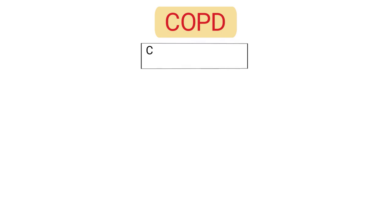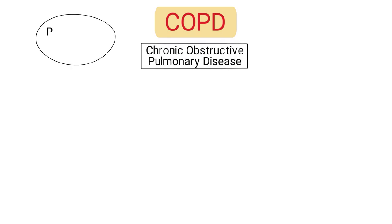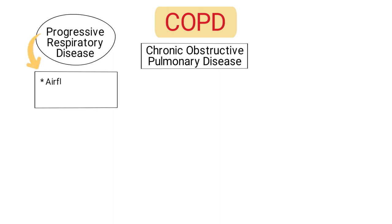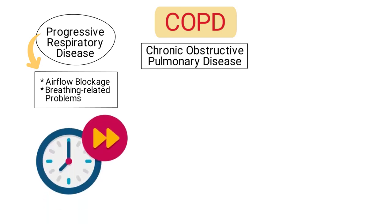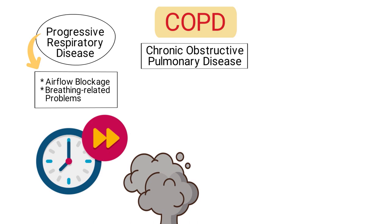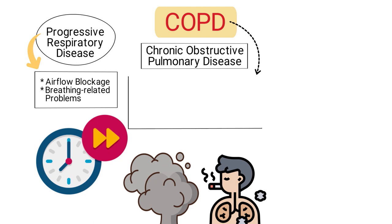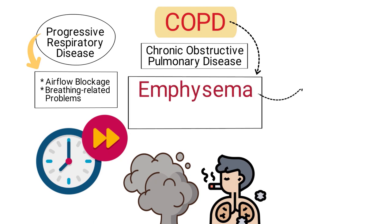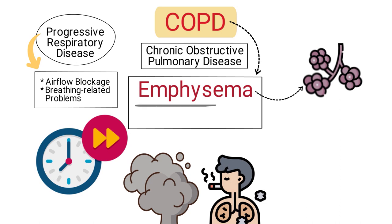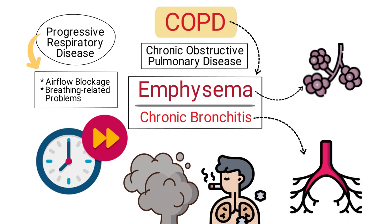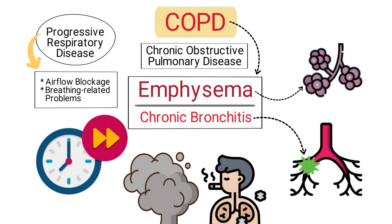First, we have COPD, which stands for chronic obstructive pulmonary disease. It is a progressive respiratory disease that causes airflow blockage and breathing-related problems. It's predominantly caused by long-term exposure to irritating gases or particulate matter, most often from cigarette smoke. COPD encompasses both emphysema, which involves damage to the air sacs in the lungs, and chronic bronchitis, which is characterized by inflamed bronchial tubes with excessive mucus production.